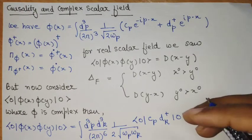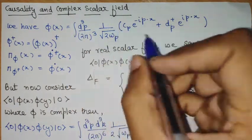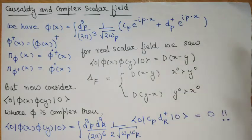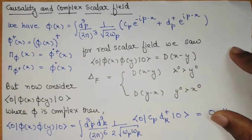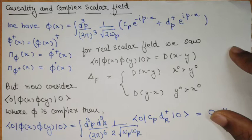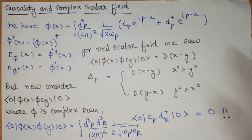In this video we discuss causality and complex scalar field. We discuss the interpretation of the propagators and what the Feynman propagator should be. So let's start.